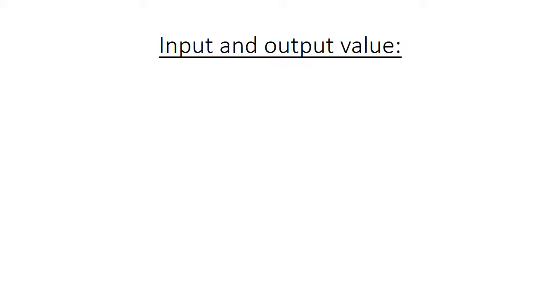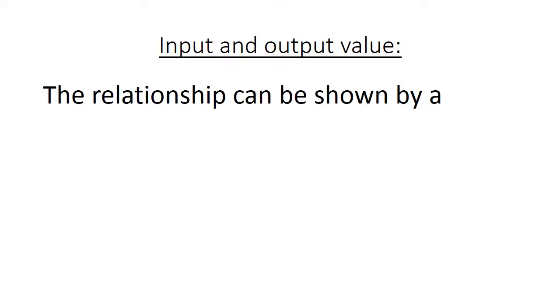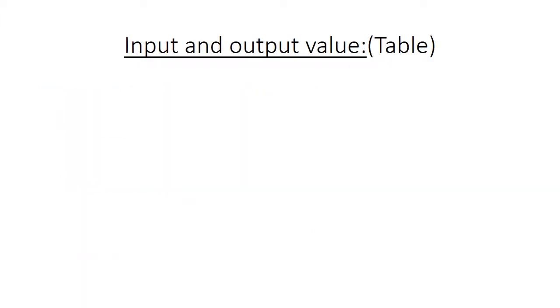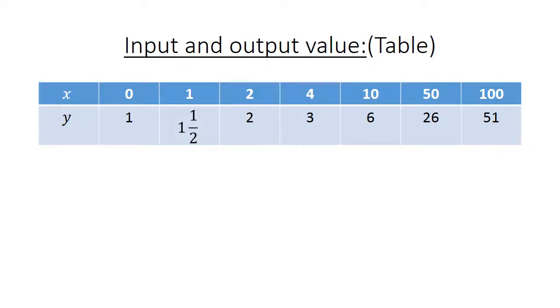Input and output value. The relationship can be shown by number 1, a table; number 2, a flow diagram; or number 3, a formula or equation. We are going to use the table method first. Here we have a table. X is my input values, Y is my output values.